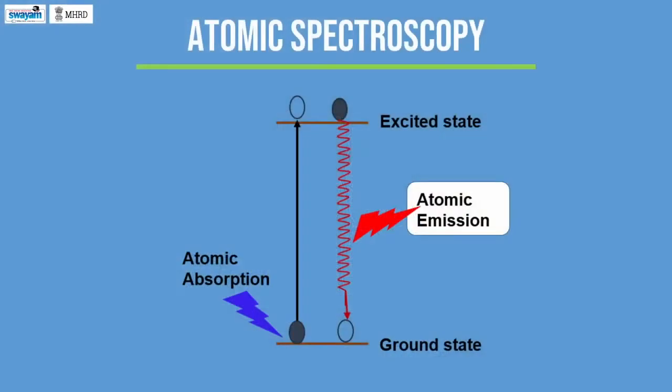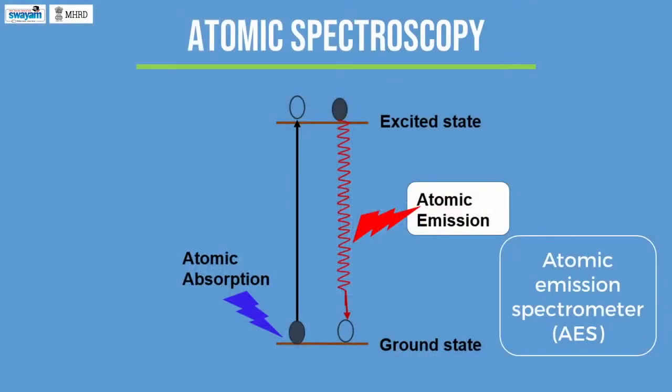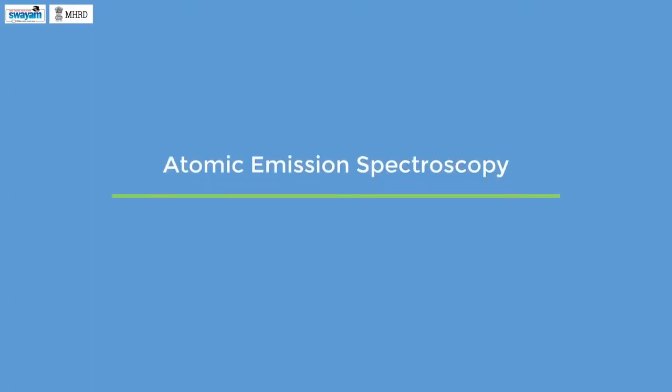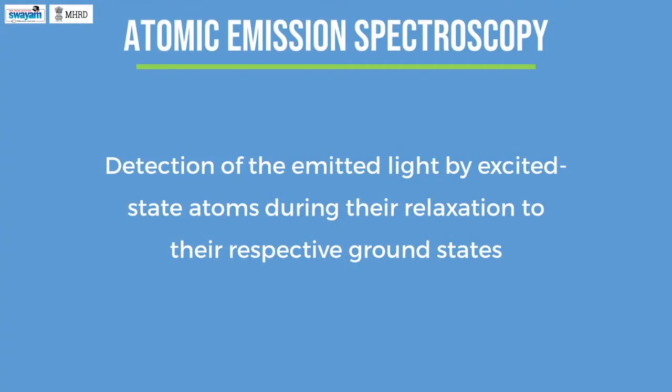On the other hand, atomic emission takes place if an excited electron relaxes back to the ground state. Atomic emission can be measured by an atomic emission spectrometer, such as a flame atomic emission spectrometer, inductively coupled plasma optical emission spectrometer, and so on. Atomic emission spectroscopy is a fundamental technique mainly used for qualitative and quantitative analysis of different elements present in a given solid or liquid sample. This method is based on the detection of emitted light by excited state atoms during their relaxation to their respective ground states.